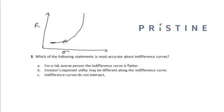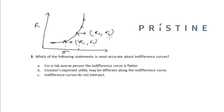An indifference curve will look something like this. The utility function of the investor is the same along the indifference curve. If this point is represented by r1, Sigma1 and this point by r2, Sigma2, it means that if risk increases from Sigma1 to Sigma2, the investor is indifferent if the return increases from r1 to r2.